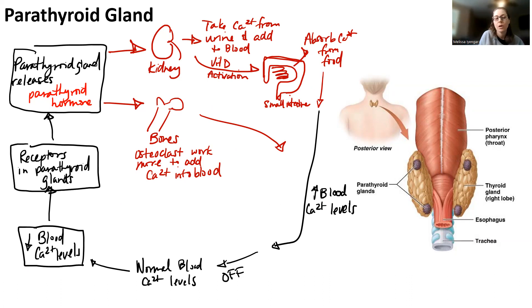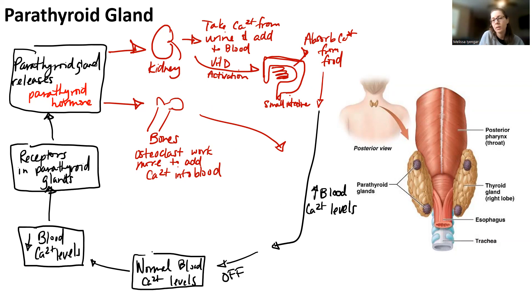You have to turn the system off so that you don't keep releasing parathyroid hormone. As soon as your blood calcium levels are normal, the whole homeostatic mechanism should be turned off, or the amount of parathyroid hormone released is going to be reduced. It's easier just to say it's turned off.